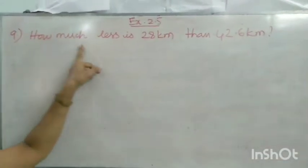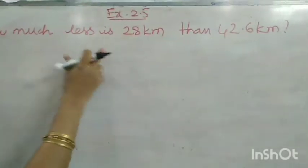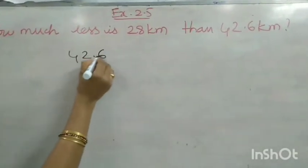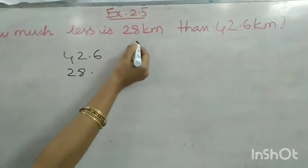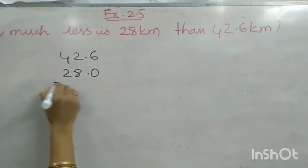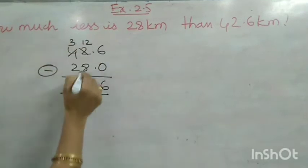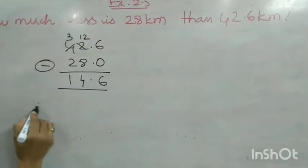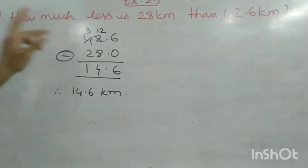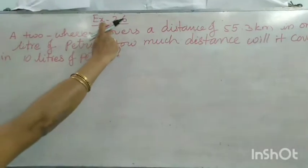Question 9 in this exercise: How much less is 28 kilometres than 42.6 kilometres? Since the question asks 'how much less', you find the difference. Write 28 as 28.0 to align the decimal, then subtract: 42.6 − 28.0 = 14.6 kilometres. Therefore, 28 kilometres is 14.6 kilometres less than 42.6 kilometres.